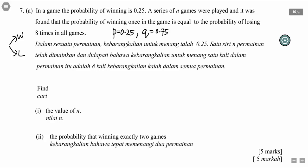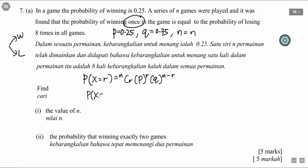A series of n games were played. The question says the probability of winning once — so x equals 1 — is equal to the probability of losing eight times in all the games. These words confused me. What I'll do to make it clearer is move the 'eight times' to the front.